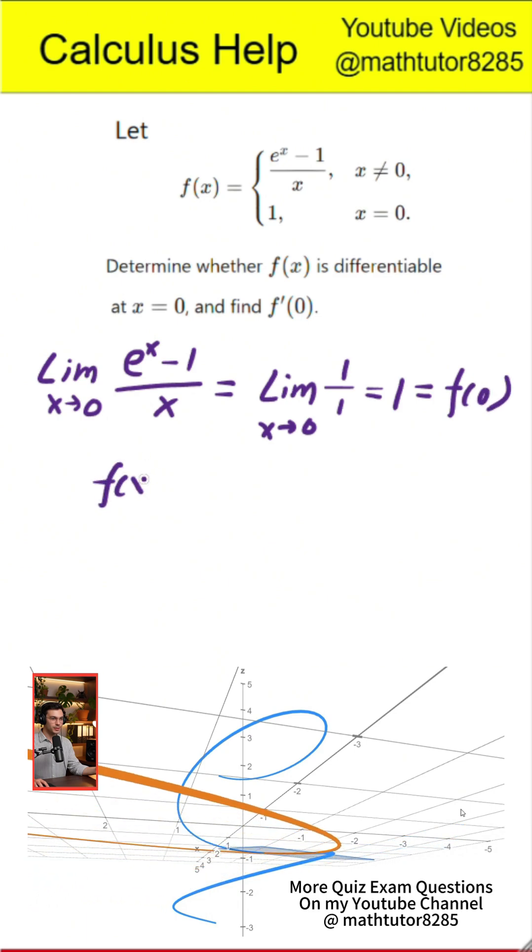Since this limit equals the given value f of 0, which is also 1, the function is continuous at x equals 0.